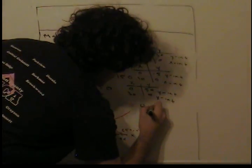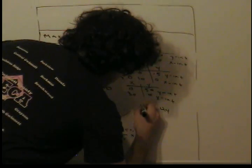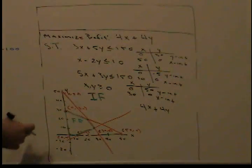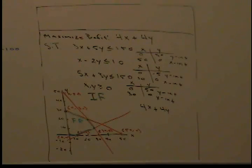We left off in the last video finding the feasible region by graphing all the linear equations. Now we have to find our optimal solution, and our optimal solution is going to be at a corner point of our feasible region. We have to refer back to our profit equation, which was 4x plus 4y. We plug in each of the corner points into the profit equation, and whatever gives us a higher value is going to be our optimal solution.